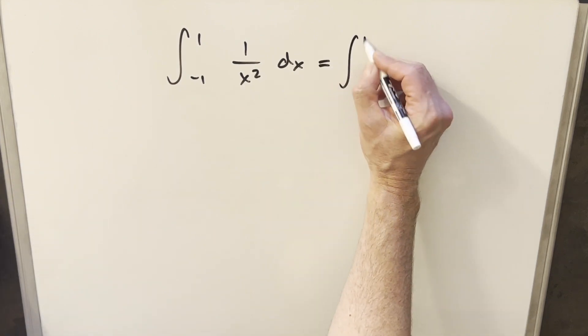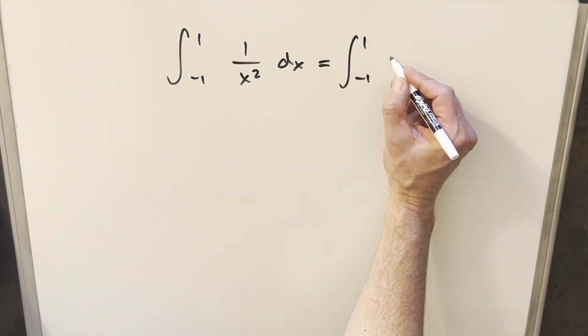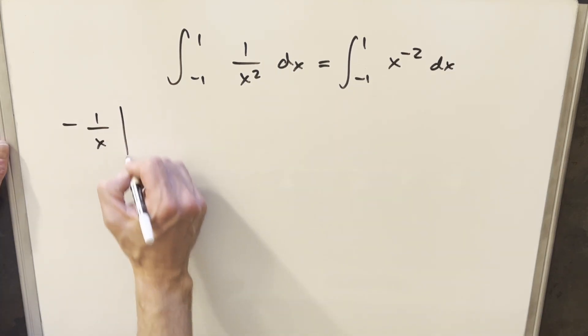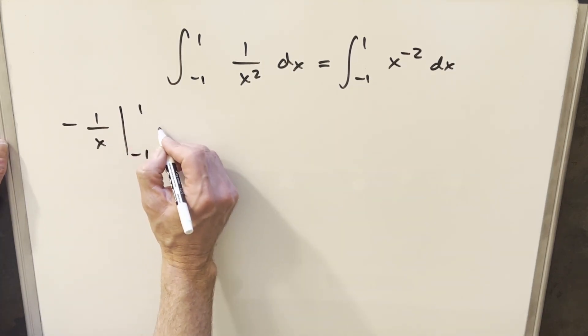What I can do is, again, at first just rewrite this in the numerator as x to the minus 2 dx. So then we'll just go ahead and integrate and we end up with minus 1 over x. And we just need to evaluate this from minus 1 to 1.